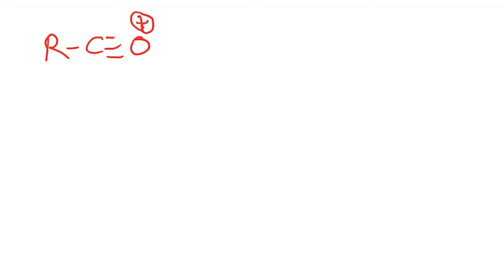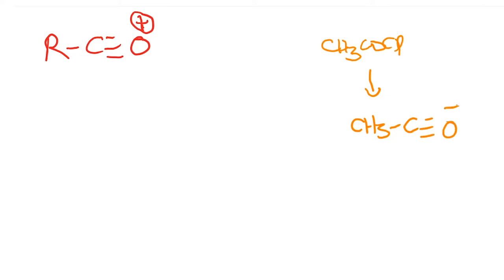Now let us move on. As we discussed, the electrophile generated during the reaction is RC≡O+. This R can be any alkyl group. So if you start from acetyl chloride, you end up with CH3C≡O+. If you start with a longer chain carbon, you are going to end up with that corresponding product, the oxocarbonium ion.